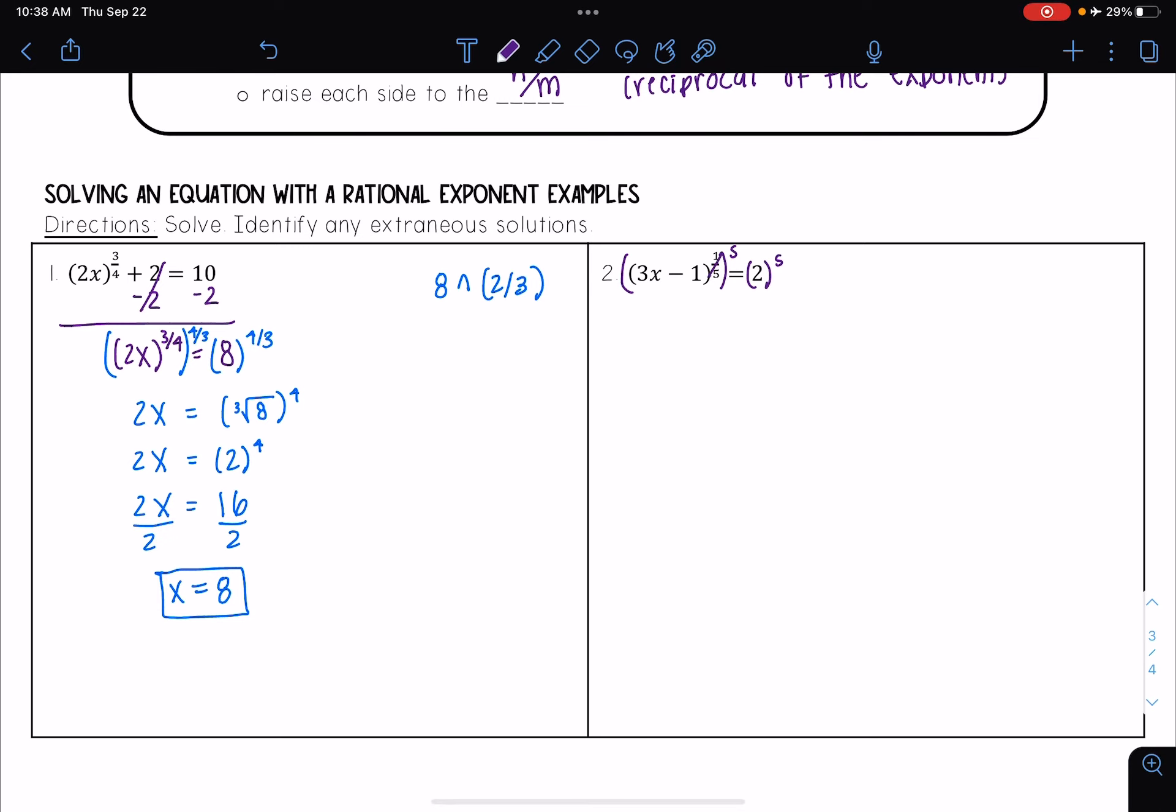And so those powers cancel out and I end up with 3x minus 1 is equal to 2 raised to the 5th power, which is 32.